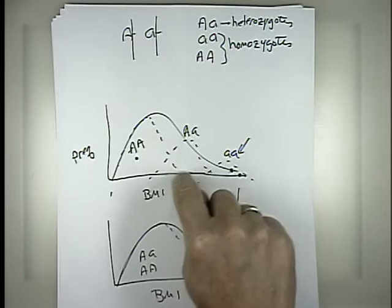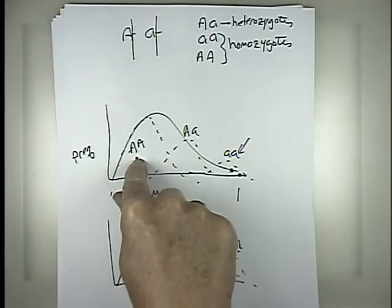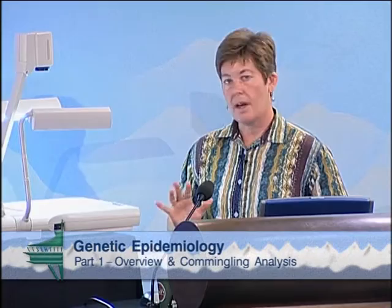What's important to keep in mind is that even though we're saying each sub-distribution may correspond to a particular genotypic class, we don't have any genotype data — we're modeling this. We're saying that if we fit a series of normal distributions to the data, this could be consistent with underlying genetic effects. It's a very nice approach if you have several different quantitative traits you're considering for your studies — you can do a commingling analysis and see which one might be best for your genetic studies. That ends this portion of the commingling analysis lecture. Thank you.